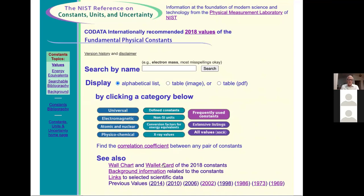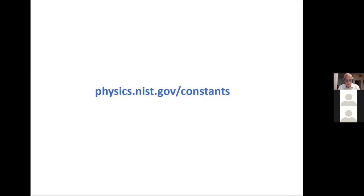We also give out wallet cards — you can write to NIST and ask for one, which has a bunch of constants. Sometimes people like to have that in their pocket. You never know when somebody on the street will stop you and ask what the electron mass is lately. The website is physics.nist.gov/constants — something you should be able to remember — or you can just Google 'constants' and you'll get it.